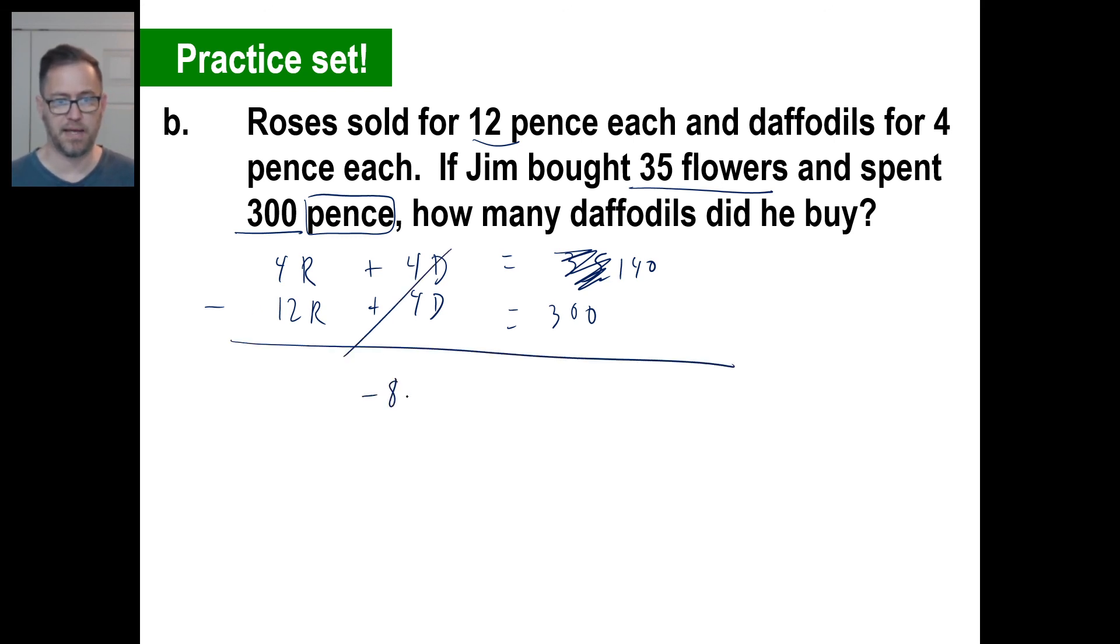Four times 12 is negative eight times the roses. 140 minus 300 is negative 160. And then if you do the arithmetic, negative eight goes into negative 160 20 times. By the way, if you ever get like a negative answer, oh, you know, Jim bought negative 20 roses. I want to see that. Anyway.